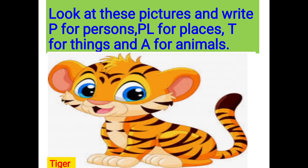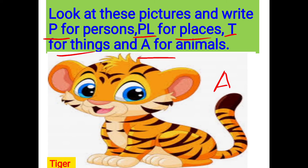Now dear students, let us understand more about nouns. Look at these pictures and write P for persons, PL for places, T for things, and A for animals. You are having a picture of a tiger. Tiger is not a person, not a place, not a thing — tiger is an animal. So we will write A here.